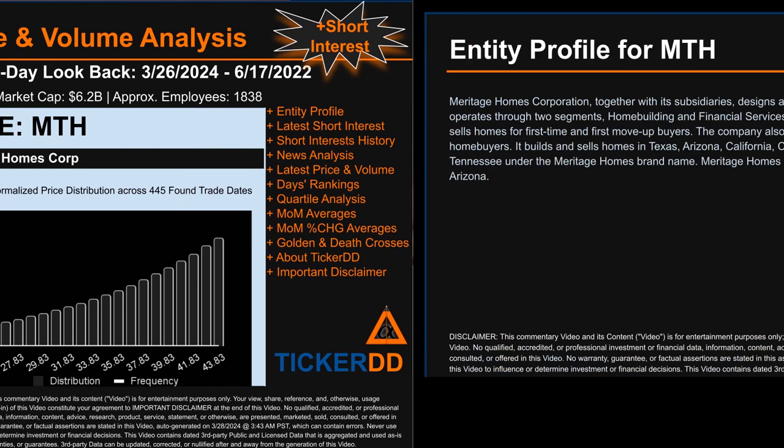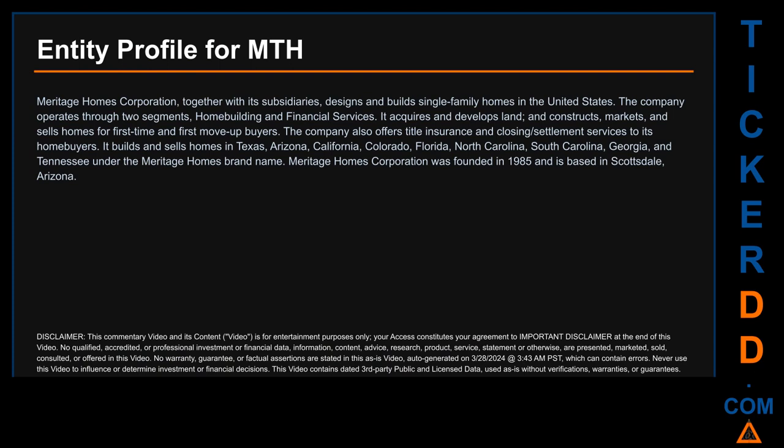Hello, my name is Carl. I searched the public web to find information about the company behind this ticker. Meritage Homes Corporation, together with its subsidiaries, designs and builds single-family homes in the United States. The company operates through two segments: home building and financial services. It acquires and develops land, and constructs, markets, and sells homes for first-time and first move-up buyers. The company also offers title insurance and closing settlement services, and builds homes in Texas, Arizona, California, Colorado, Florida, North Carolina, South Carolina, Georgia, and Tennessee under the Meritage Homes brand name. Meritage Homes Corporation was founded in 1985 and is based in Scottsdale, Arizona.